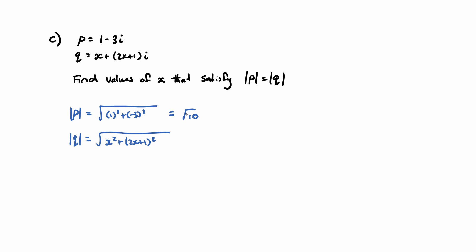We can't really simplify that at the moment, but I do know that we want to make this equal to that. So P magnitude equals Q magnitude. We're going to get root 10 is equal to the square root of x squared plus 2x plus 1 all squared.